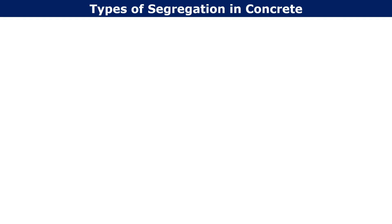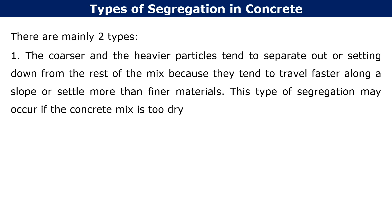There are mainly two types of segregation in concrete. The first type is where the coarser and heavier particles tend to separate out or settle down from the rest of the mix because they tend to travel faster along a slope or settle more than the finer materials. This type of segregation may occur if the concrete mix is too dry.